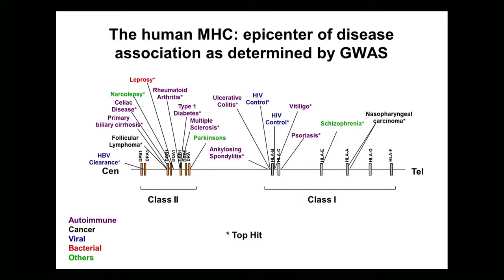The human major histocompatibility complex is the most rich 4-megabase region of the human genome in terms of association with different types of diseases, and some of those are shown here. There are a lot of different types: autoimmunity, cancer, viral disease, bacteria, and even some oddballs like schizophrenia and Parkinson's, which we didn't expect to be involved with HLA class 1 or class 2.